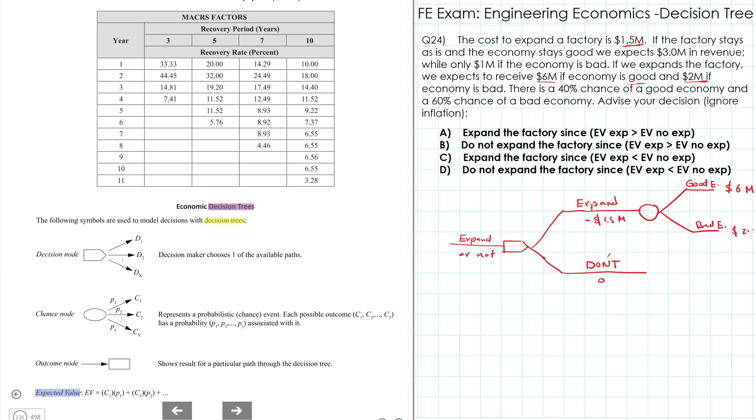If we did not expand and the economy was good, we are expecting $3 million. So for good economy, we are expecting $3 million and $1 million if the economy is bad.